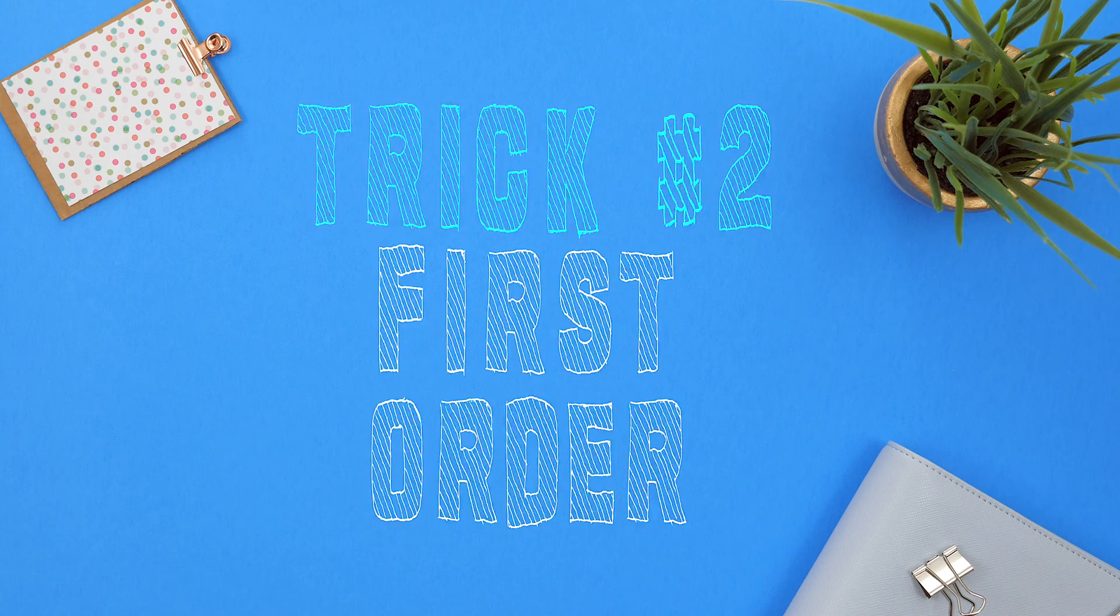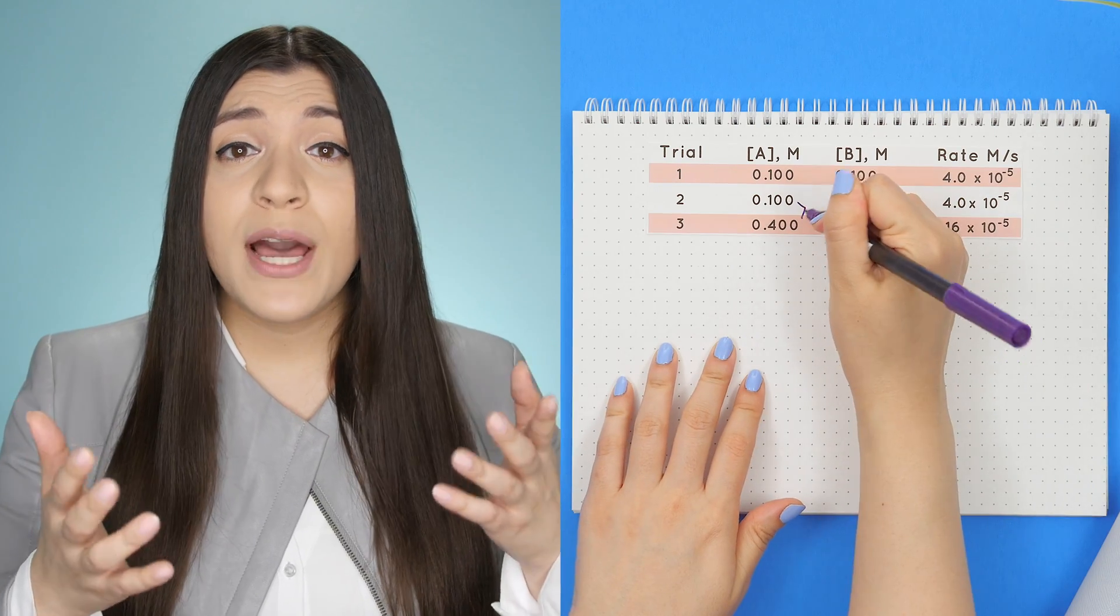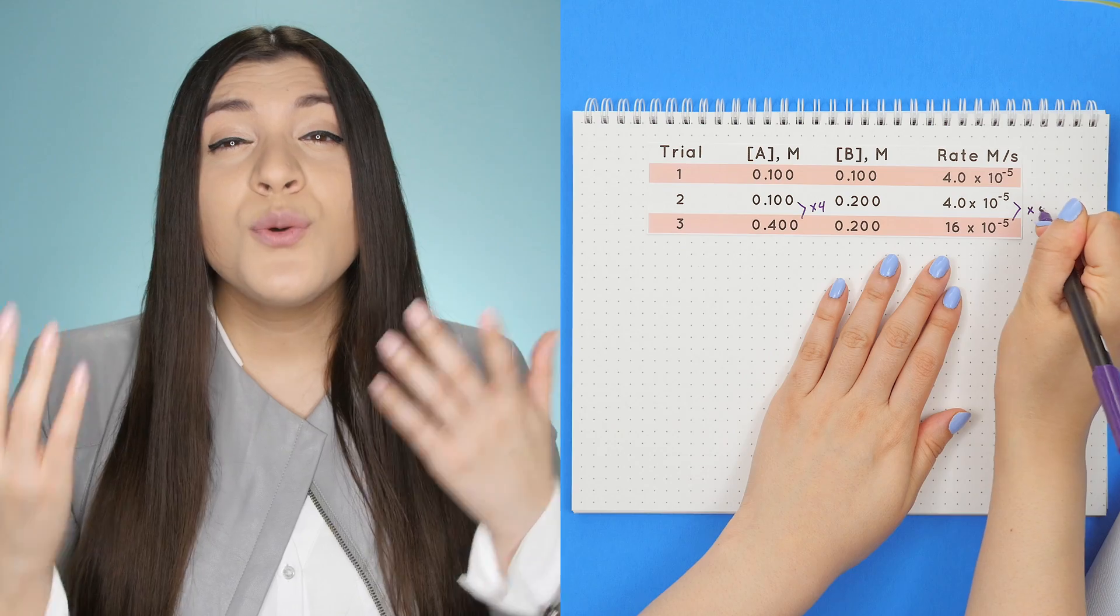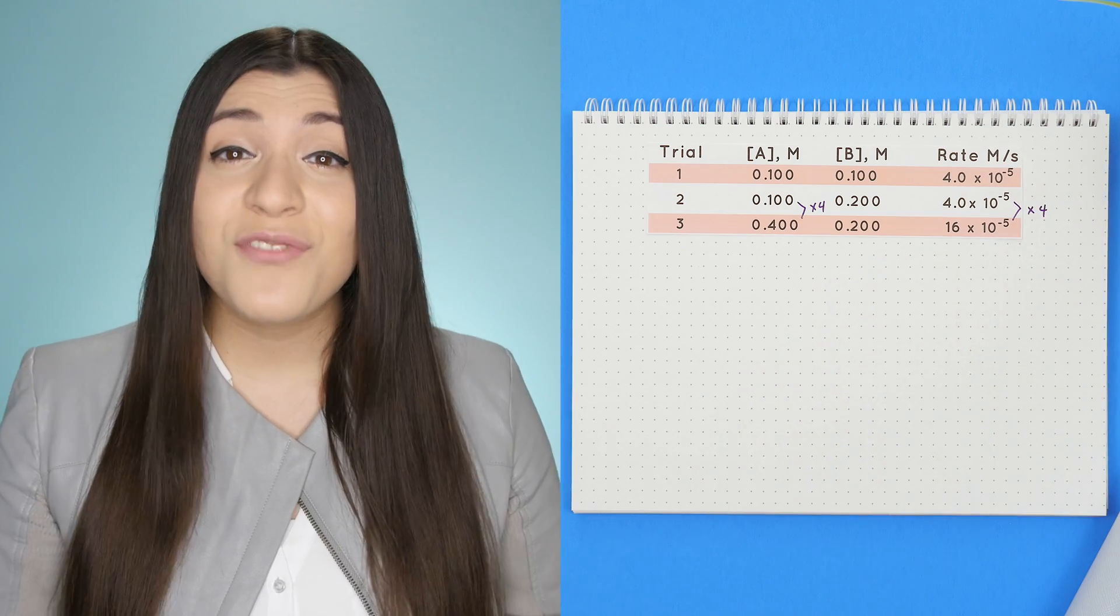Trick two, first order. If whatever you multiplied by your reactant's concentration is the same number you multiplied by the rate, then it's first order.